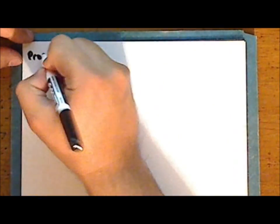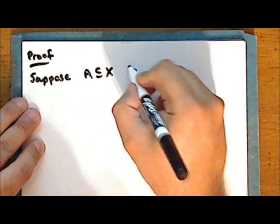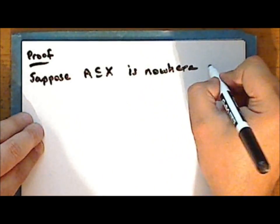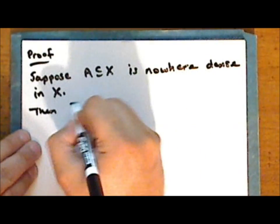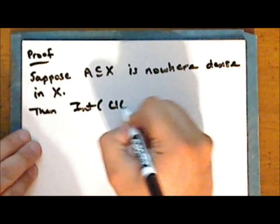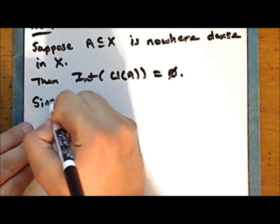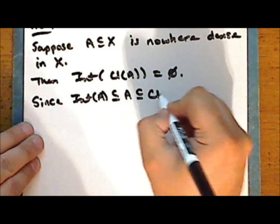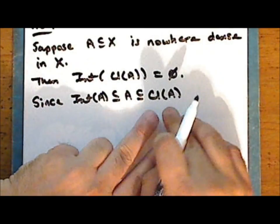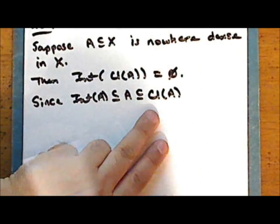So suppose the subset A of the space X is nowhere dense in the space. Then the interior of the closure of the set A is empty. Now since the interior of the set A is a subset of the set A, which is itself a subset of the closure of A, and the interior of the closure of A is empty, there are no non-empty open sets contained in the closure of A.